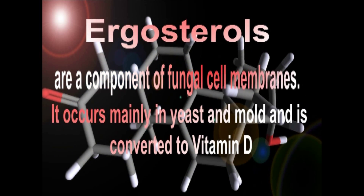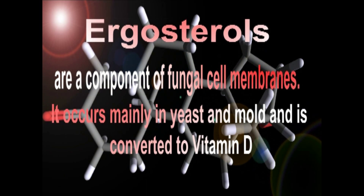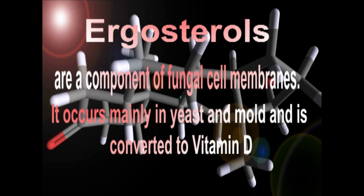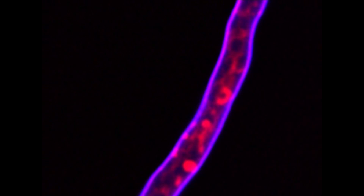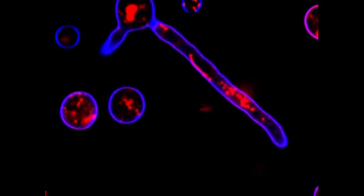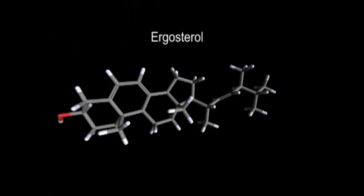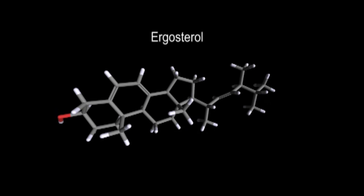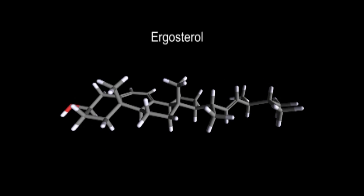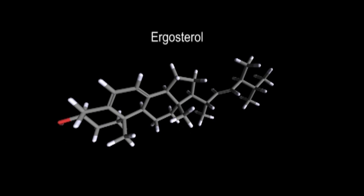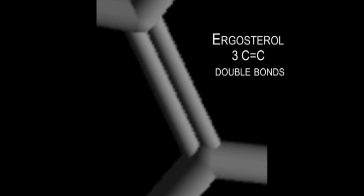Ergosterol is a component of fungal cell membranes. It occurs mainly in yeast and mold, and is converted to vitamin D. Here we can see some fungal cell membranes. It also contains three cyclohexane rings and one cyclopentane ring. Ergosterol has three carbon double bonds and one alcohol group.